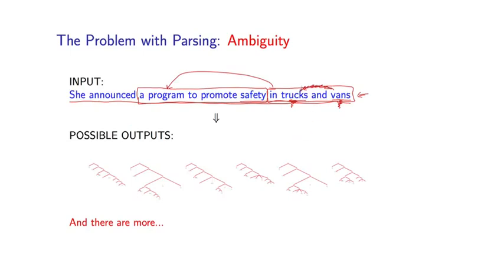So for example, I could coordinate trucks and vans, which is correct, but I could coordinate vans and safety, which gives you another interpretation. This preposition could be modifying safety or it could be modifying program. Actually, it could also be modifying promote or even announced. You're going to get many different interpretations under these different places that this prepositional phrase can modify the preceding words.